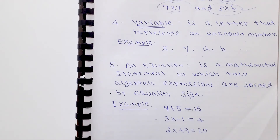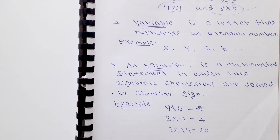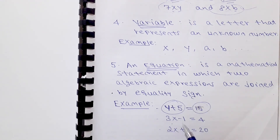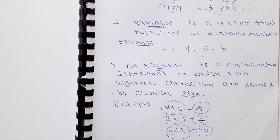An equation is a mathematical statement in which two algebraic expressions are joined by an equality sign. For example: y plus 5 equals 15; 3x minus 1 equals 4; and 2x plus 9 equals 20. These all have an equality sign joining the two algebraic expressions.